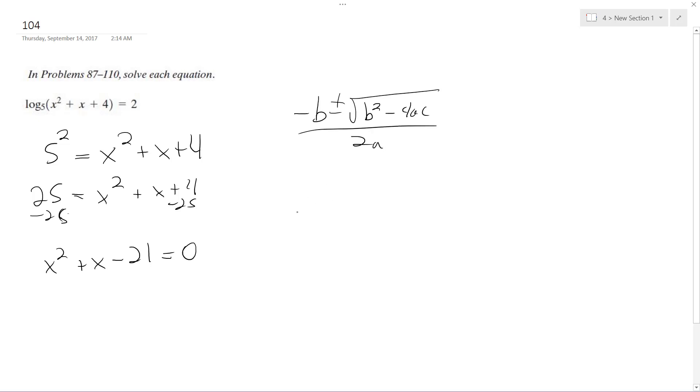So I end up with opposite of b. So negative 1 plus or minus square root of b squared. So that's 1 squared. So it's just 1 minus 4ac. 4 times 1 times negative 21 all over 2 times 1. So my final result ends up being negative 1 plus or minus square root of 85.